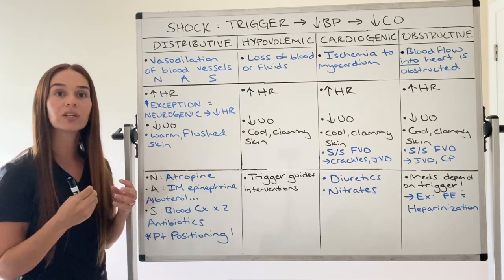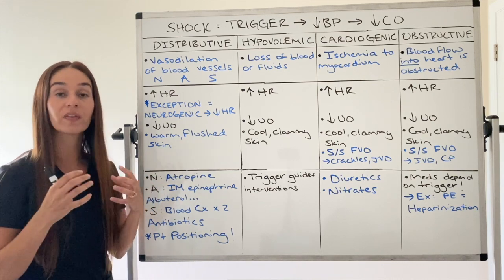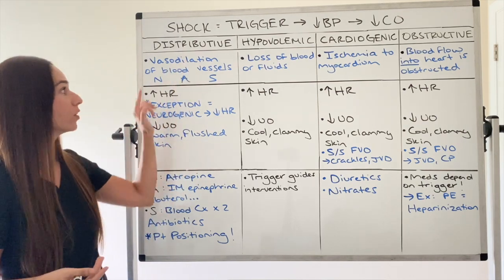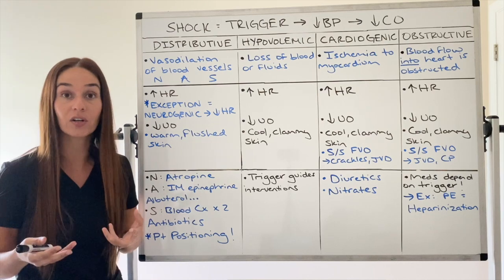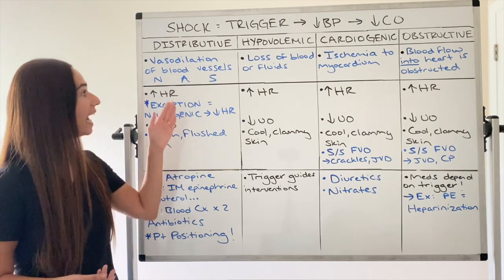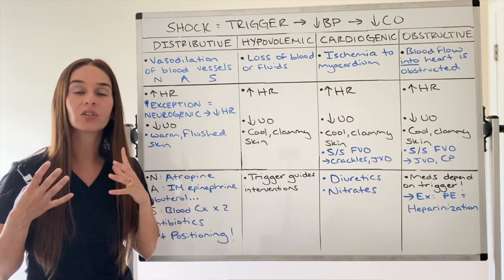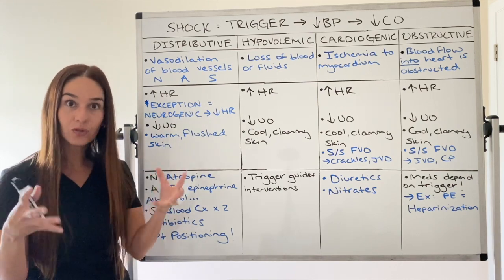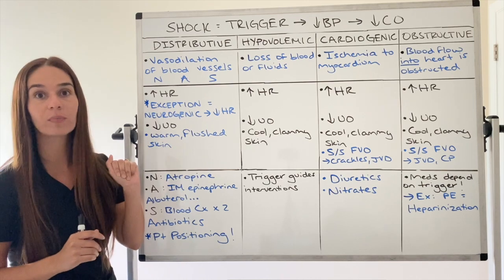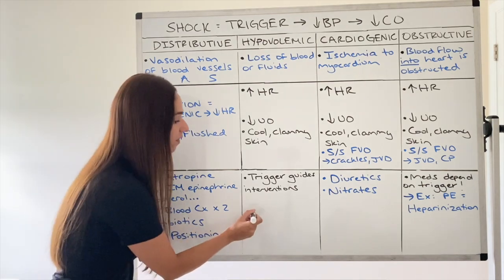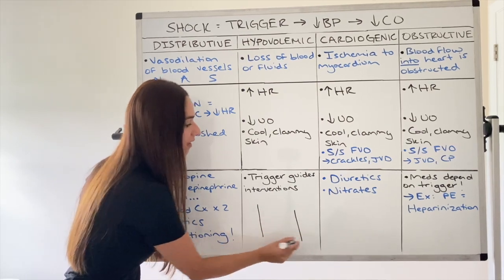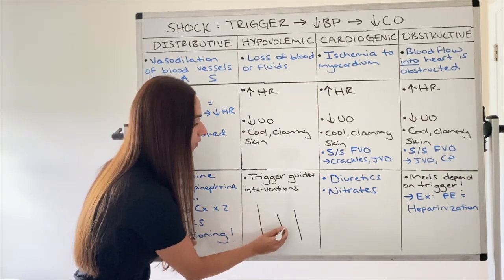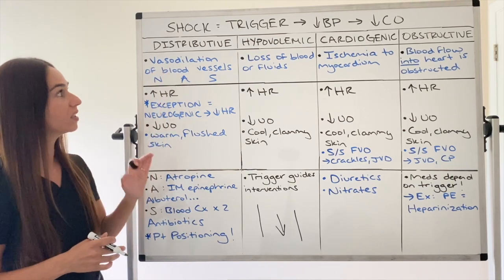With distributive shock, the pathophysiology — the 'why' behind why this occurs — is that there's a trigger. Neurogenic shock traditionally occurs after a spinal cord injury. Anaphylactic shock results from exposure to an allergen. Septic shock is related to infection. That trigger causes vasodilation of blood vessels, which means when our blood vessels become extremely dilated, the pressure inside the vessel goes down.